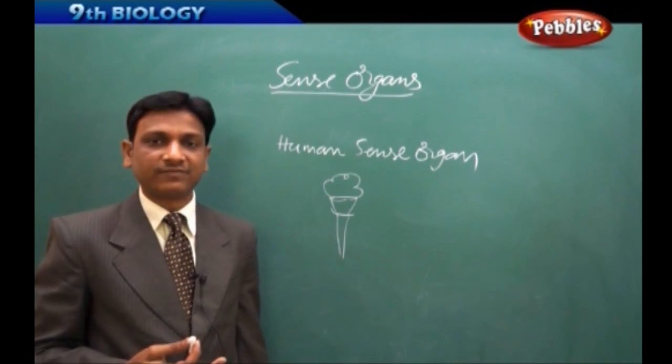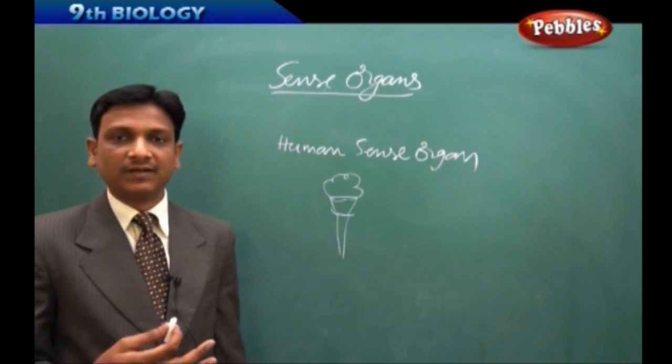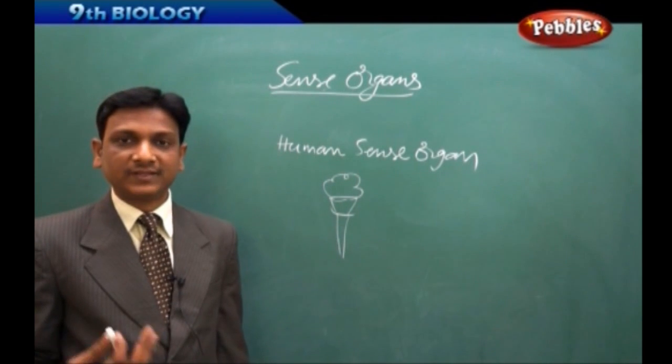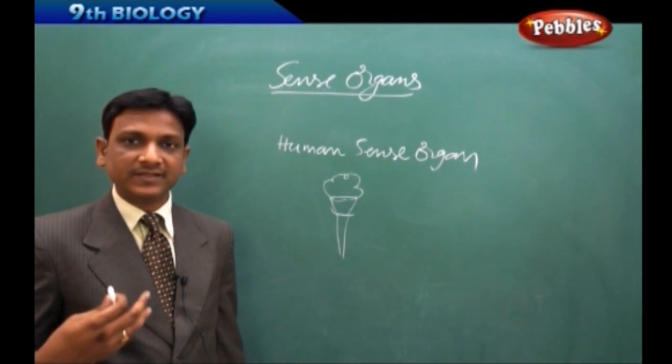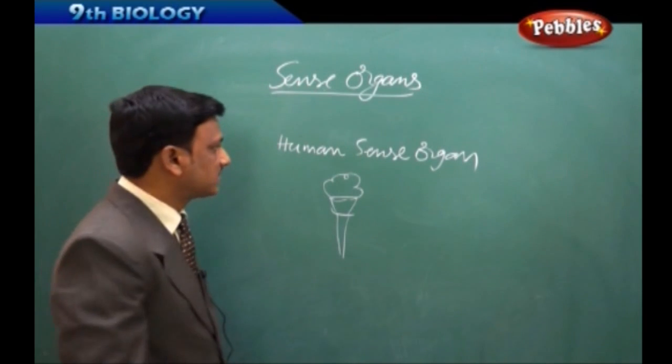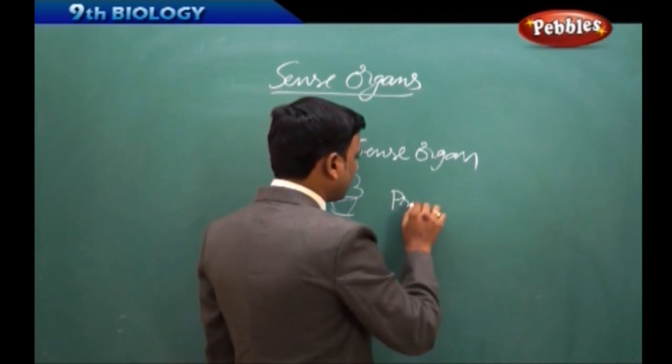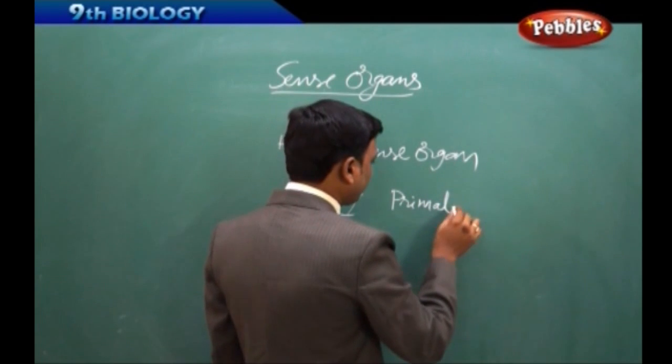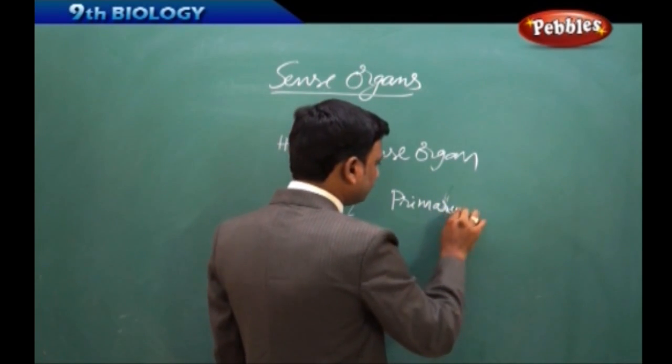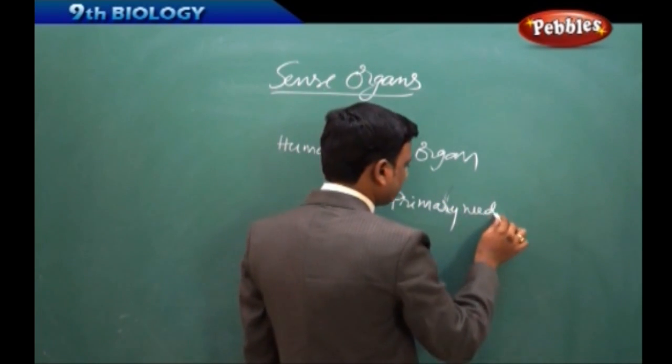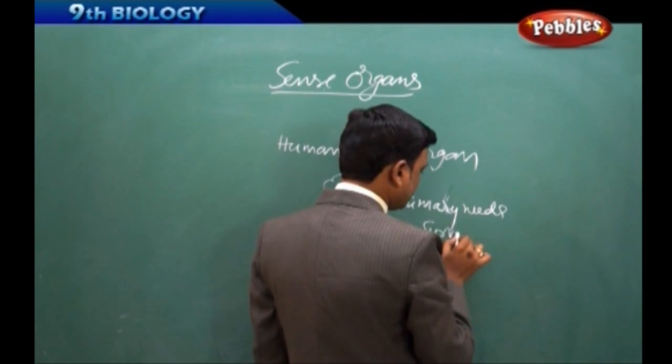The primary thing—protecting ourselves from the environmental factors or from the environment or from other organisms. The primary thing is one more primary thing is acquiring food. For all this purpose, we need sense organs. So sense organs are helpful for just survival, primary, primary needs.